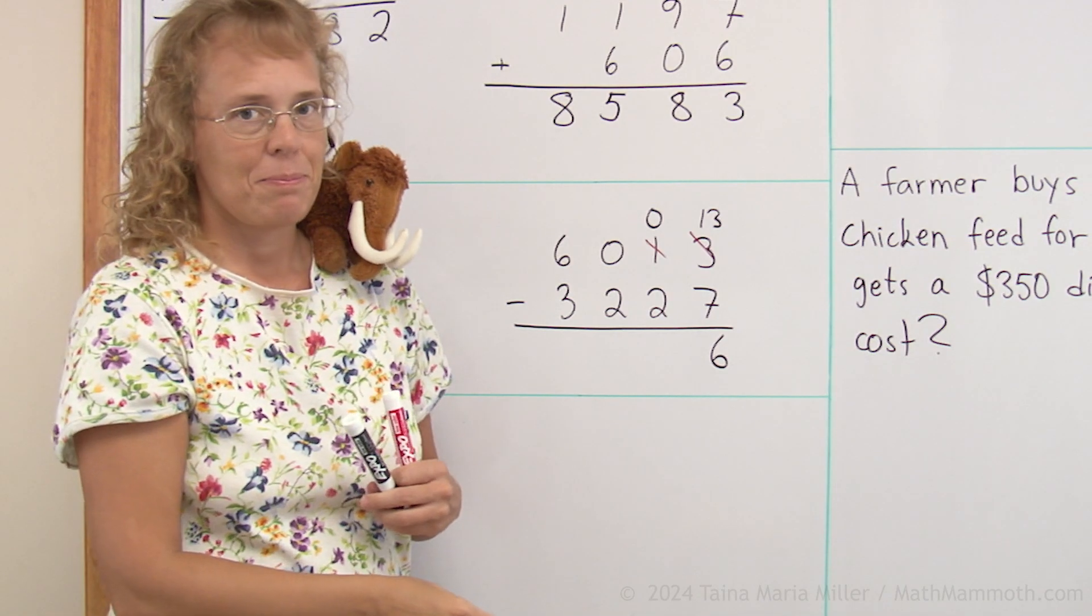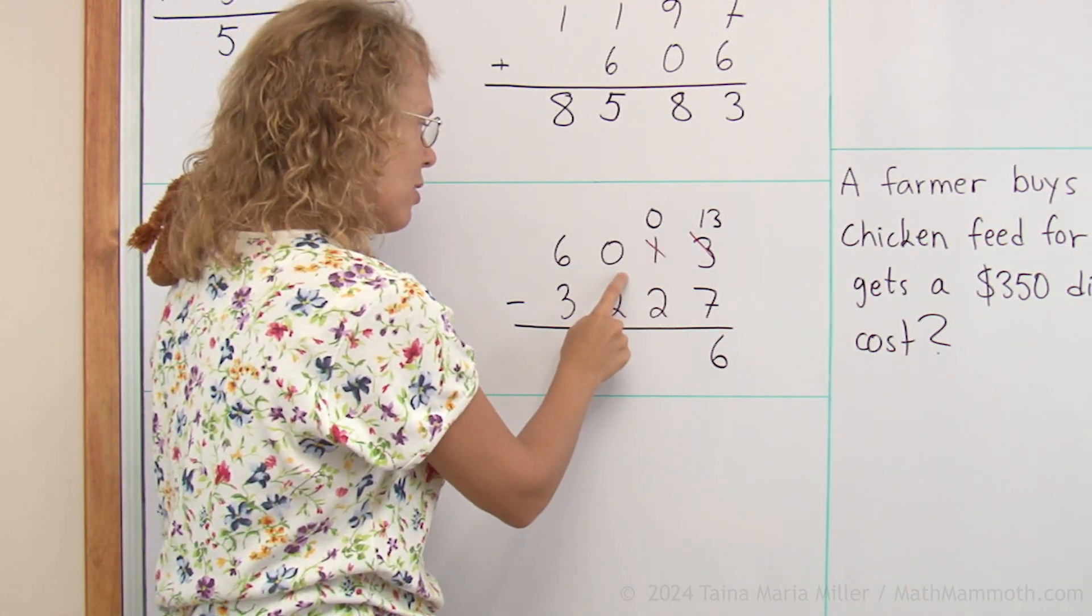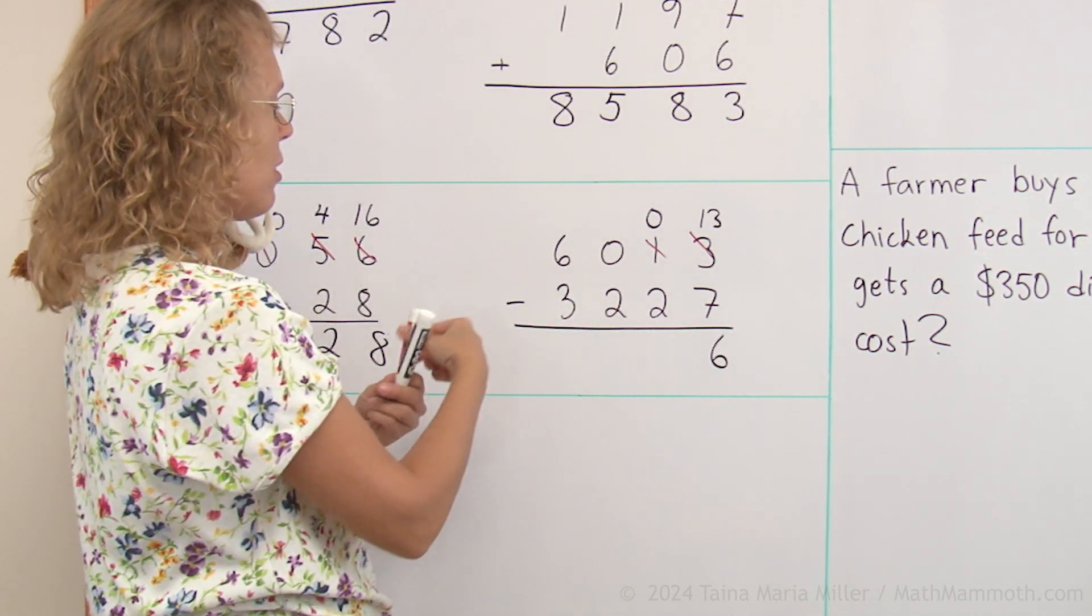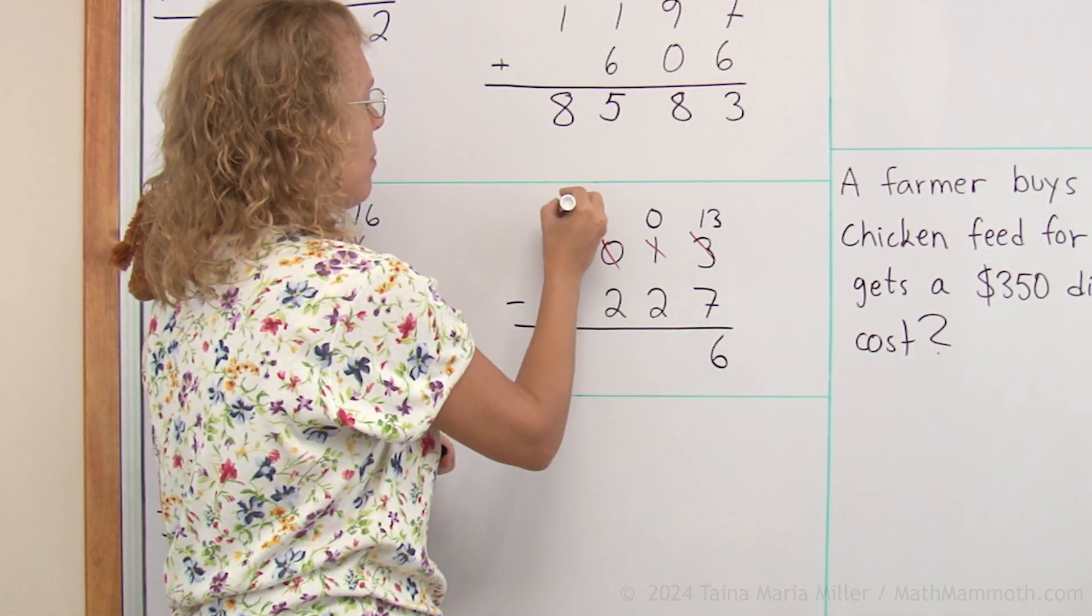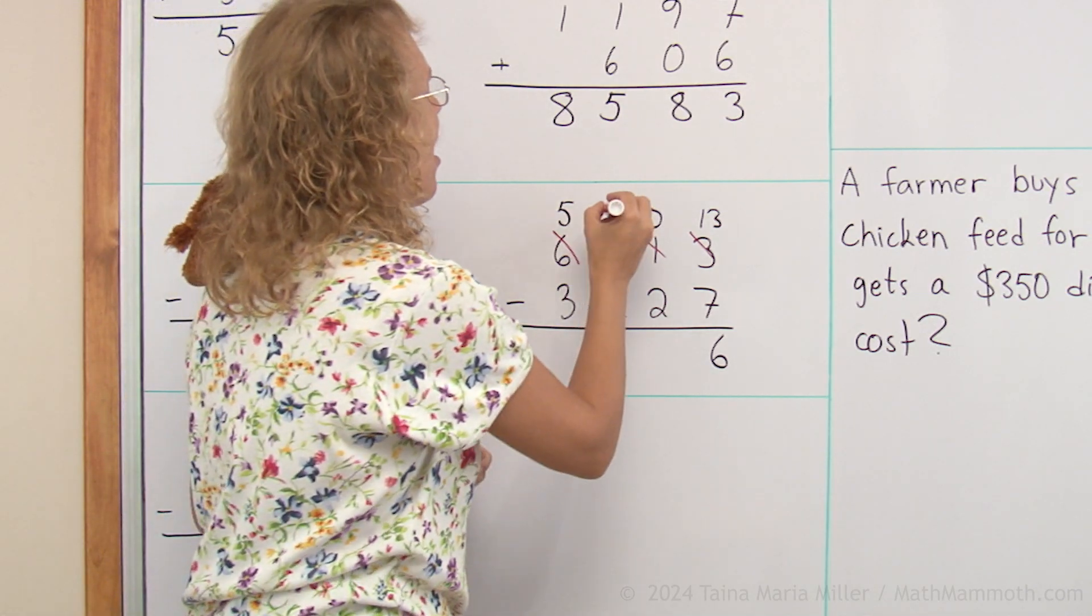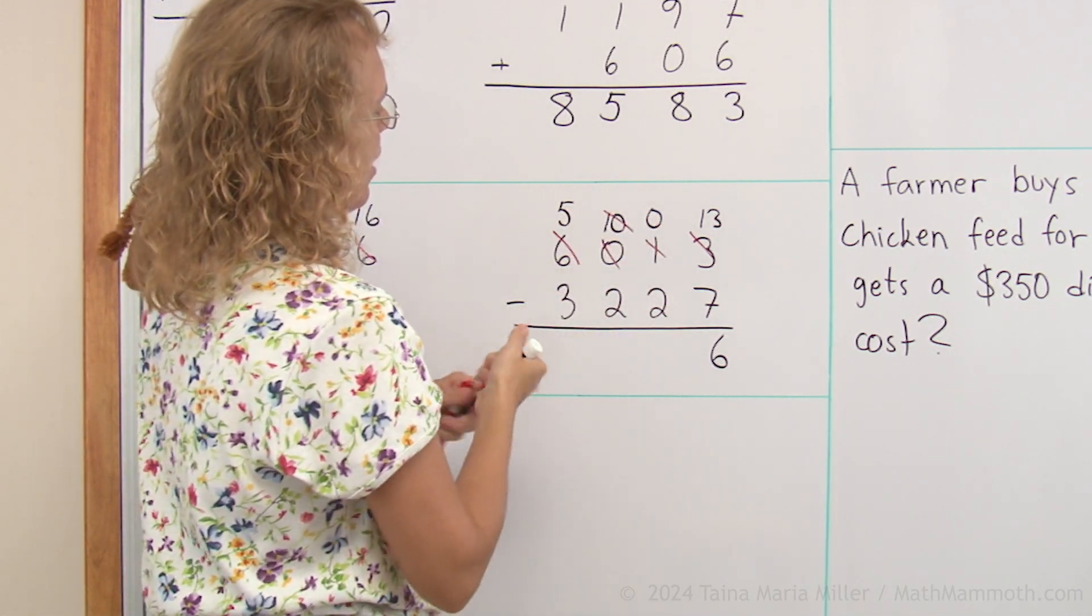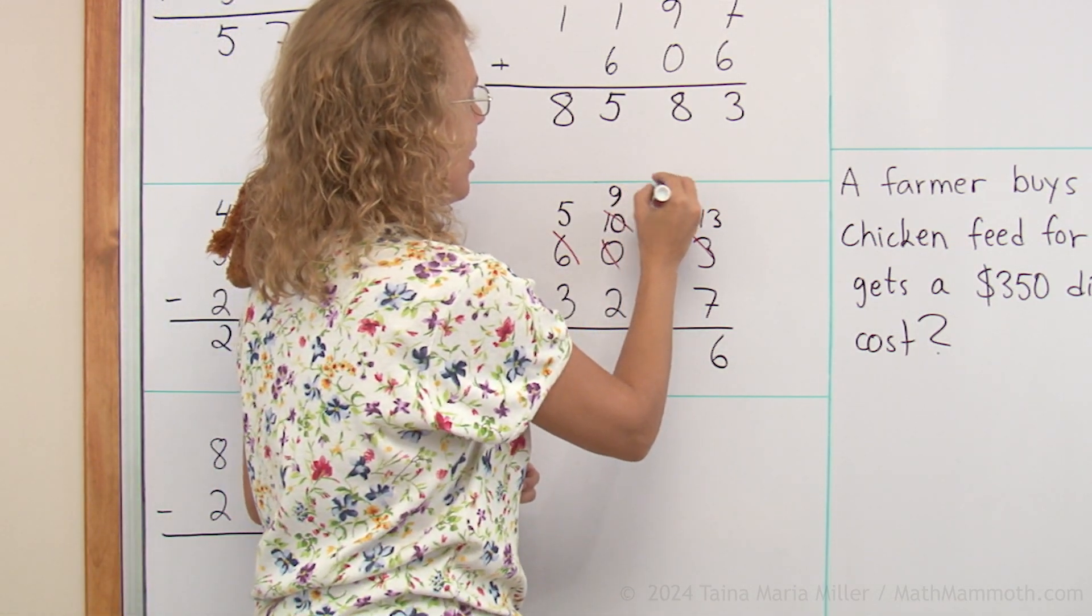Now the tens, I cannot subtract, so I need to regroup. But I have no hundreds, so I need to go all the way to the thousands. Leaving five thousand here, and then ten hundreds. And then I take one of the hundreds, leaving nine hundreds, and then getting ten here.